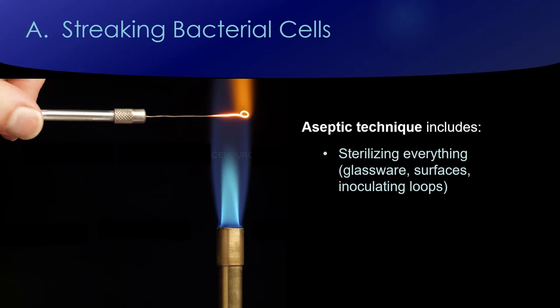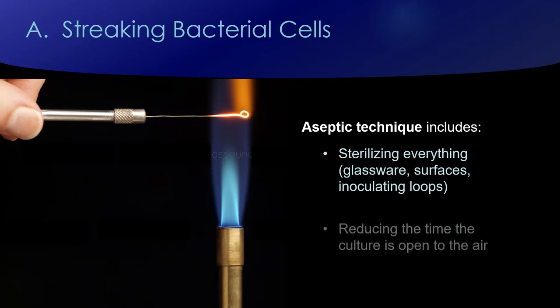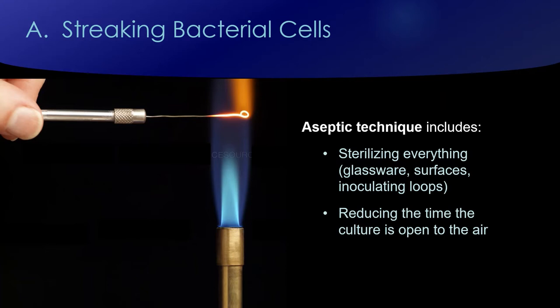Aseptic technique includes a bunch of different procedures. Generally it involves having all your equipment sterilized — here you can see an inoculation loop getting sterilized by sticking it into a flame. A lot of glassware and plasticware can be sterilized using pressurized steam or ultraviolet light. This also involves reducing the time cultures spend in the air, so you're not going to leave your culture with the lid wide open. You open your lid, try to work quickly, and put the lid back on.